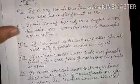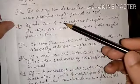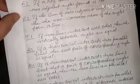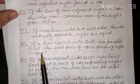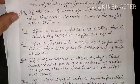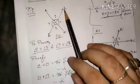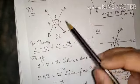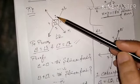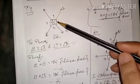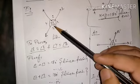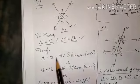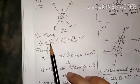Now the theorems begin, based on these two axioms. Theorem 1: if two lines intersect each other, then the vertically opposite angles are equal. Taking two lines L and M, the angles formed are angle 1, 2, 3, and 4. Angle 1 is opposite to angle 3, and angle 2 is opposite to angle 4. We need to prove angle 1 equals angle 3 and angle 4 equals angle 2.